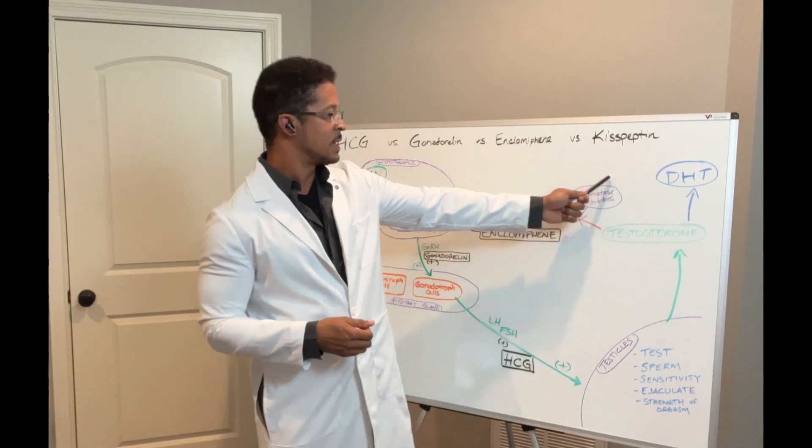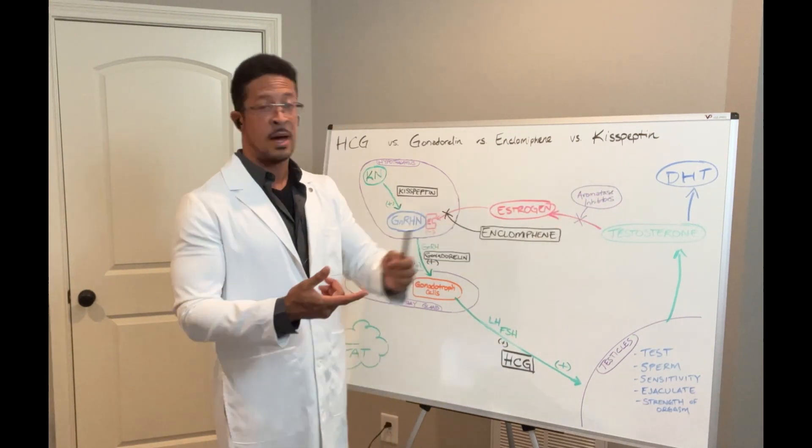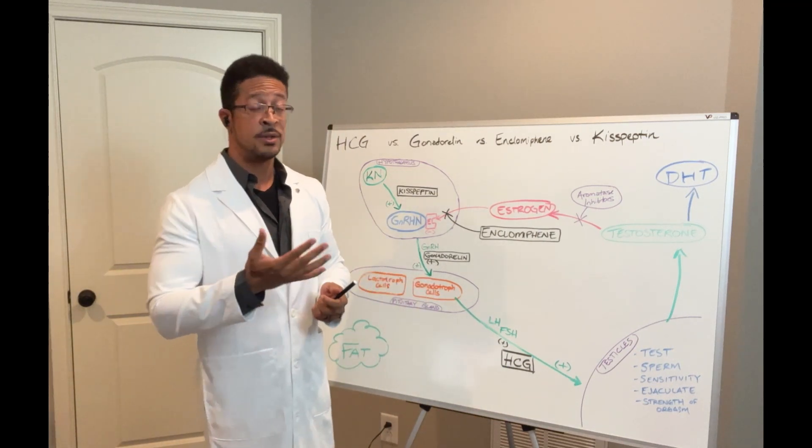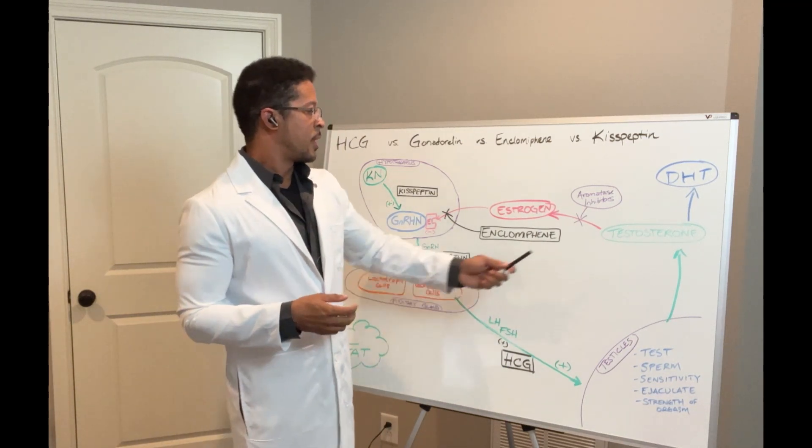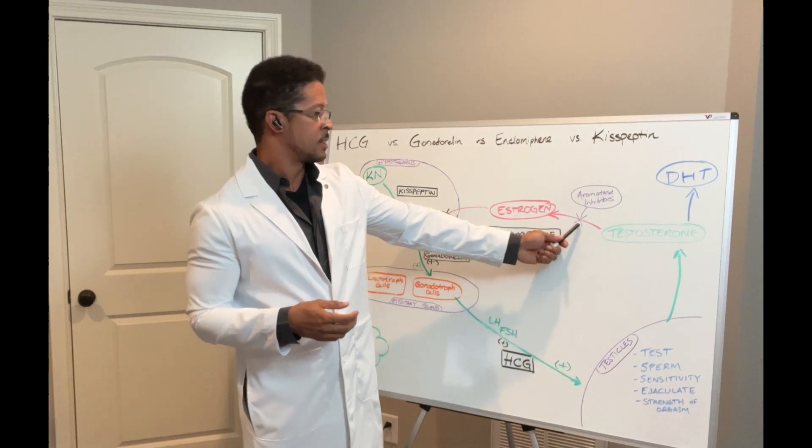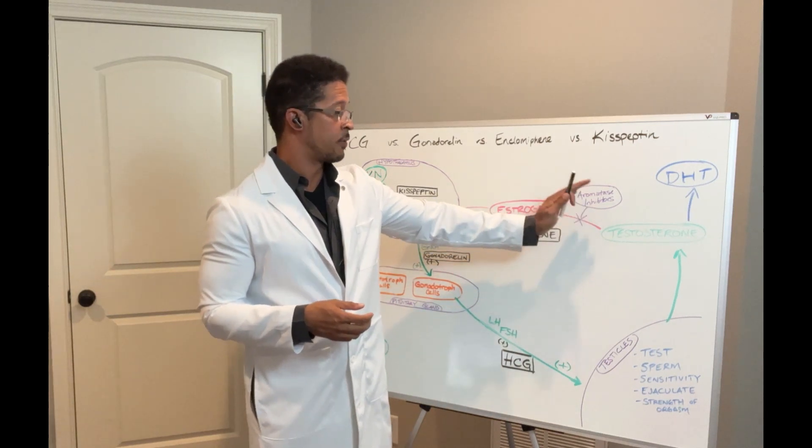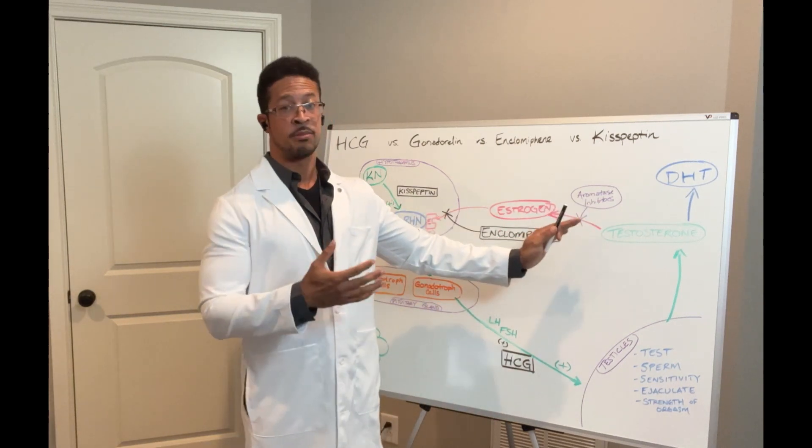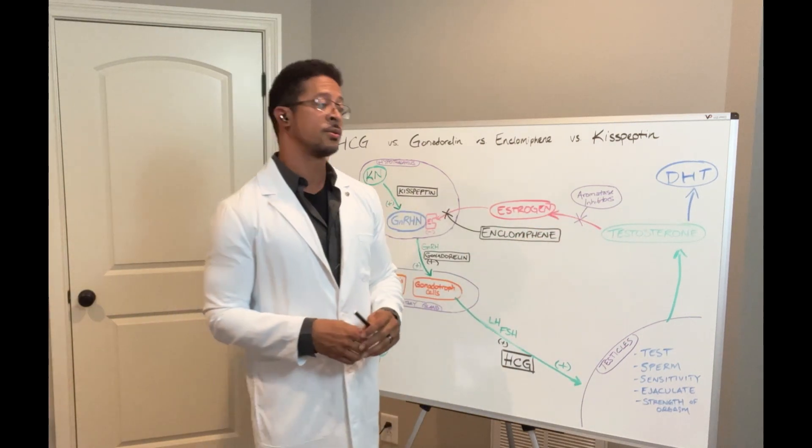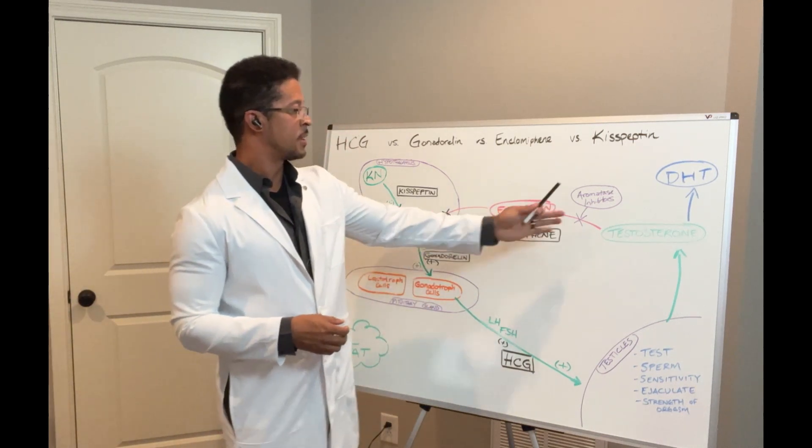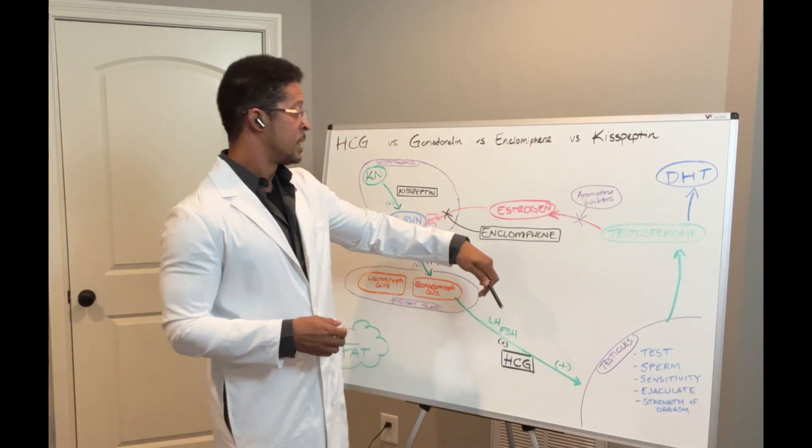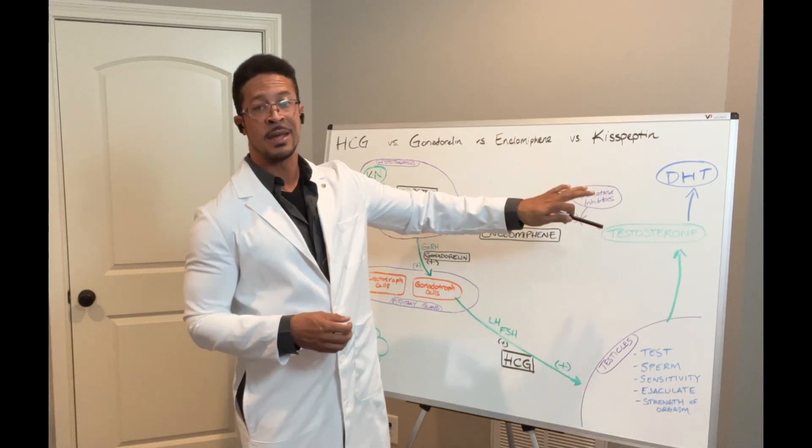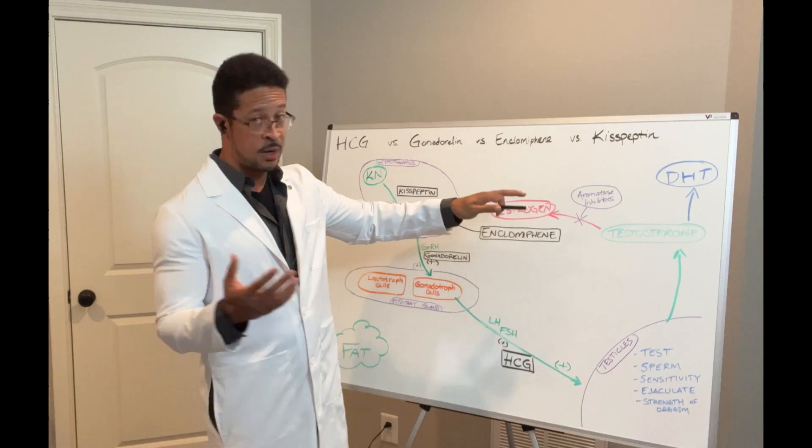We need to understand that once testosterone is floating around your body, whether the testicles produce it or whether you're injecting it, some of that is going to turn into estrogen. This right here, this is where aromatase inhibitors come in. AIs is what we call it. Anastrozole, exemestane, letrozole. There's several, there's some herbal versions too, that help to block this mechanism here to slow down and prevent testosterone from converting into estrogen. Having too much estrogen is a problem. Having too little estrogen is also a problem. So that's a very tricky balance right there. Work with your medical practitioner and hopefully they can guide you in the right direction with that.